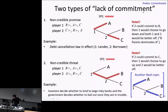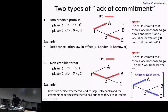There are actually two types of lack of commitment problems: the non-credible promise problem and the non-credible threat problem. The previous example illustrated the non-credible promise situation. In its general form, there are two players and three possible outcomes. Player one moves first, then player two. Player one's preference order is B, A, C and player two's preference order is C, B, A. If player two could somehow commit to choosing B, player one would go down and B would realize. But because player two's promise is not credible, player one chooses A and A realizes.